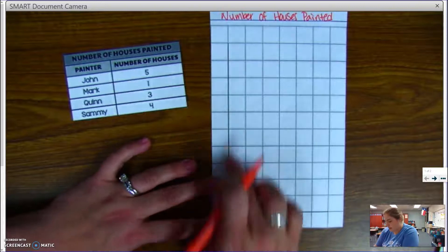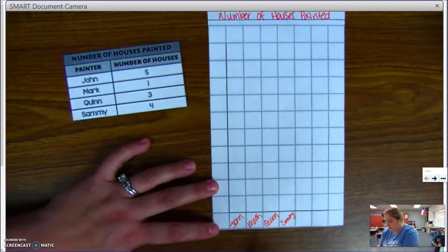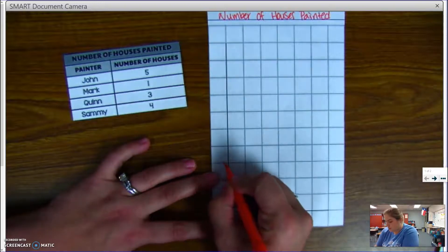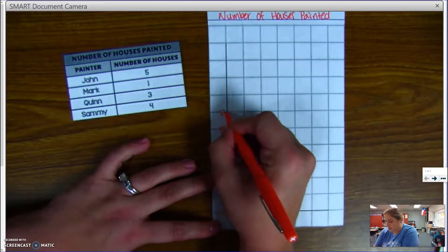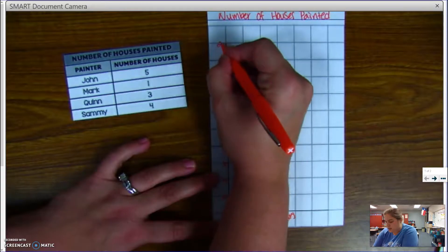And my data and my intervals will go here. So I did 0, 2, 4, 6, 8, 10, 12, 14, 16, 18, 20.